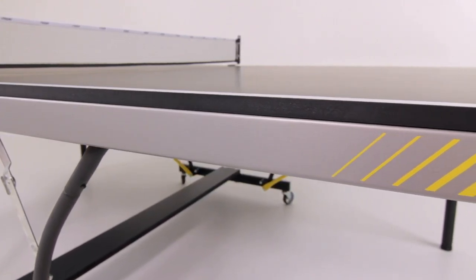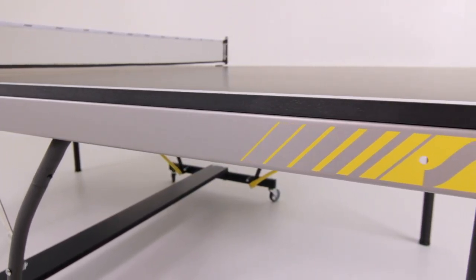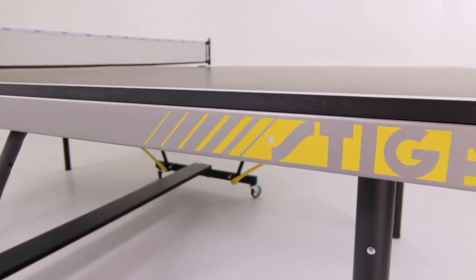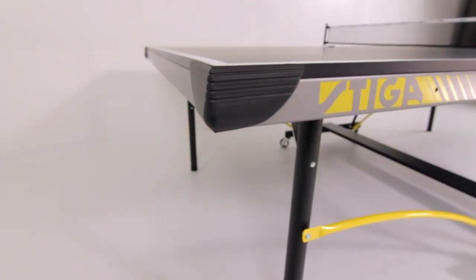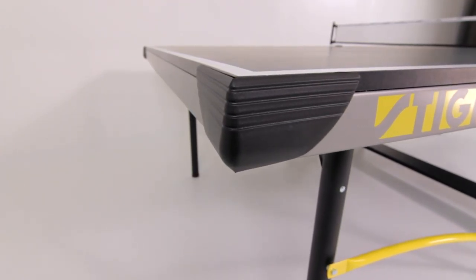Surrounding the table is a 2-inch steel apron that supports an even bounce across the entire table. The apron also features a modern Stiga logo and corner protectors offer additional safety for small children.